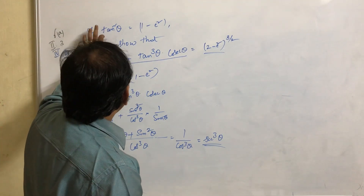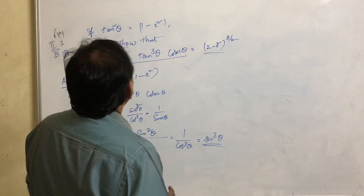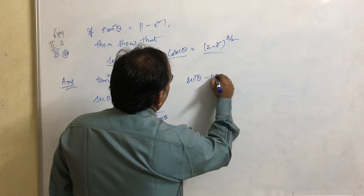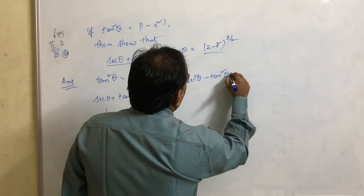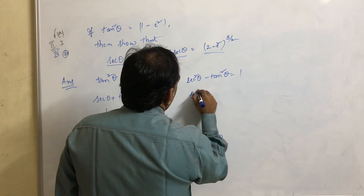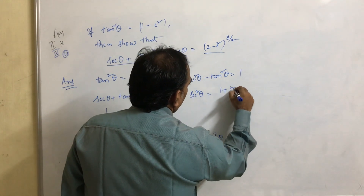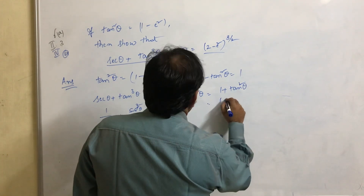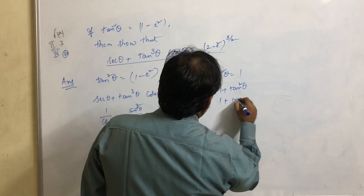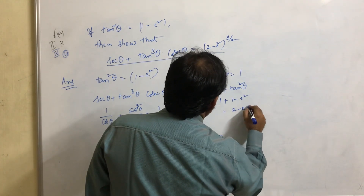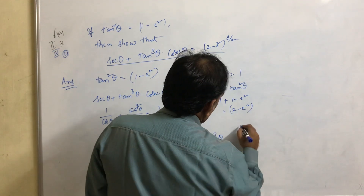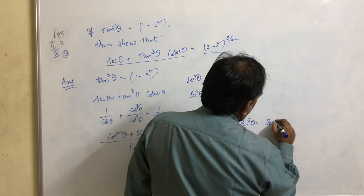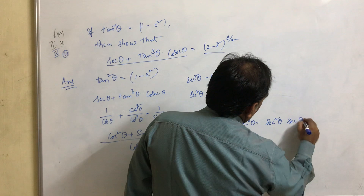Now, what is the given? Tan squared theta equals 1 minus e squared. We know that secant squared theta minus tan squared theta equals 1, so secant squared theta equals 1 plus tan squared theta. Substituting, secant squared theta equals 1 plus (1 minus e squared), which equals 2 minus e squared. Now secant cubed theta can be written as secant squared theta into secant theta.